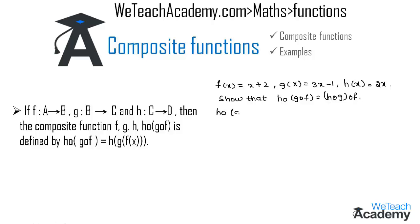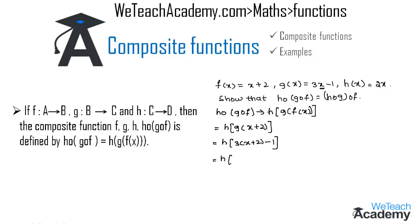First let us consider h circle g circle f, defined by h of g of f of x. Here f of x is x plus 2. Finding g of x plus 2 by replacing x with x plus 2, we get h of 3 into x plus 2 minus 1. Multiplying gives h of 3x plus 6 minus 1, which is h of 3x plus 5. Replacing x with 3x plus 5 in h of x gives 2 into 3x plus 5, which equals 6x plus 10.